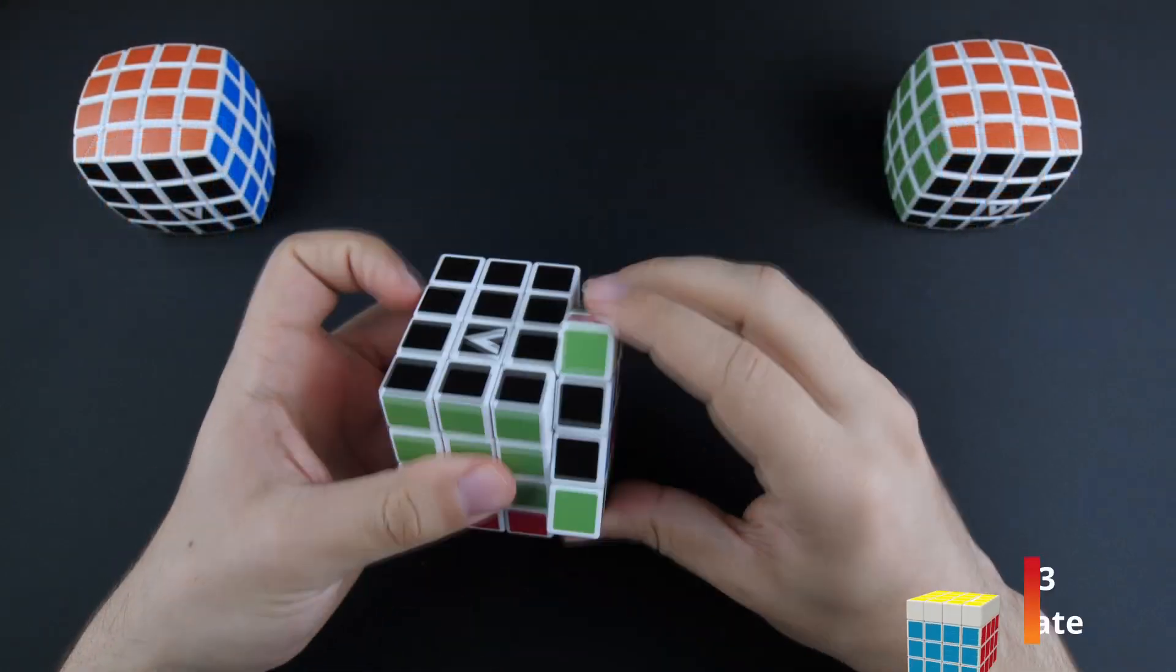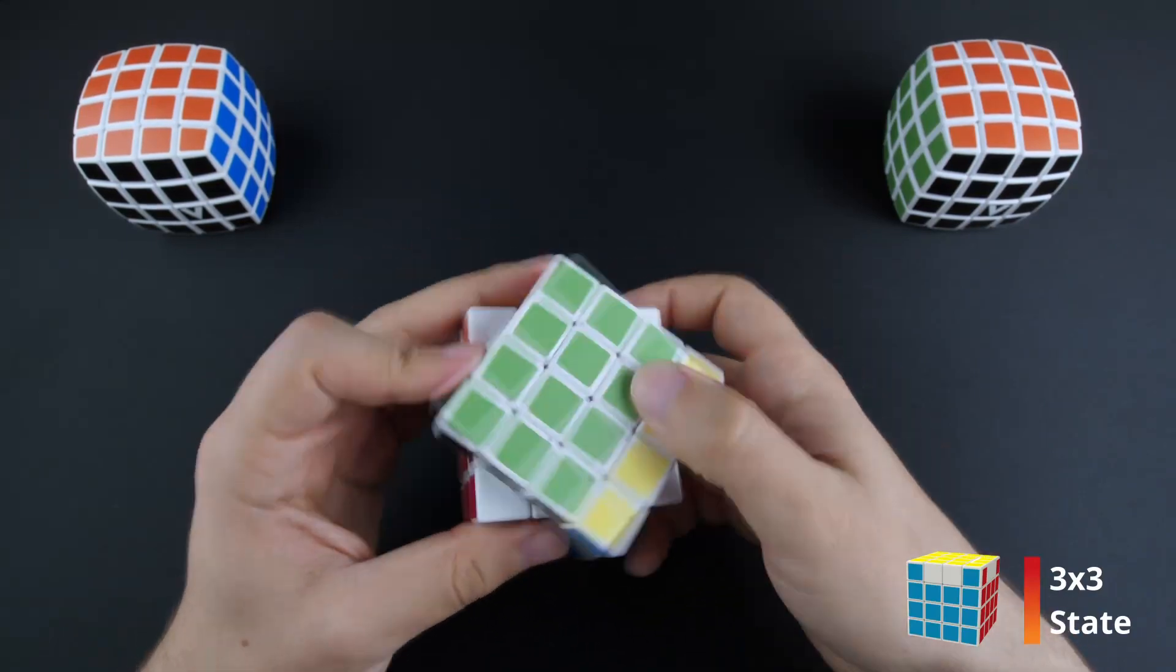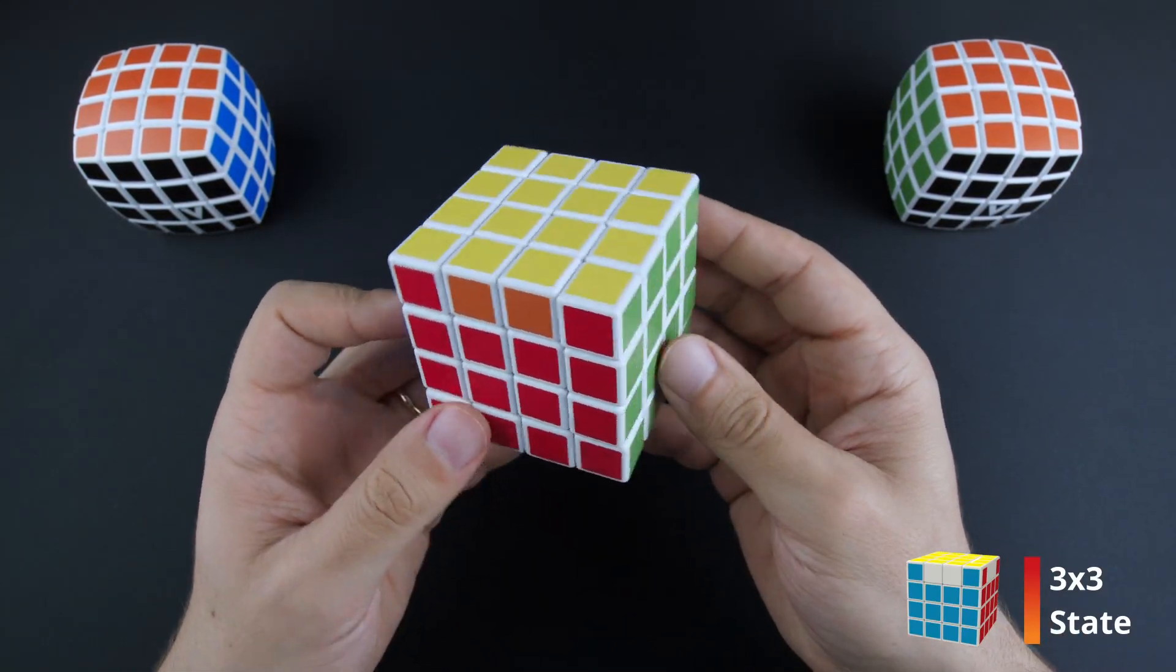Orient the corners like a 3x3, then permute them. And now, try to solve the edge pieces.